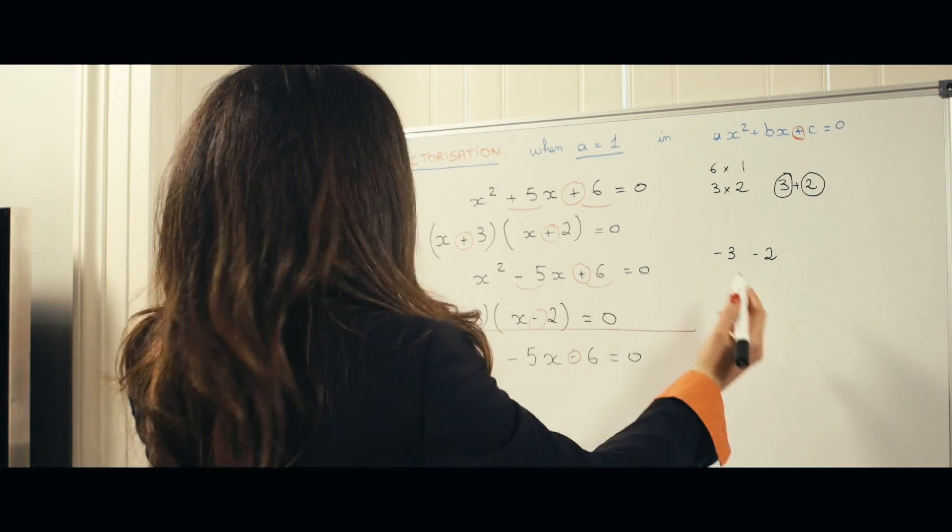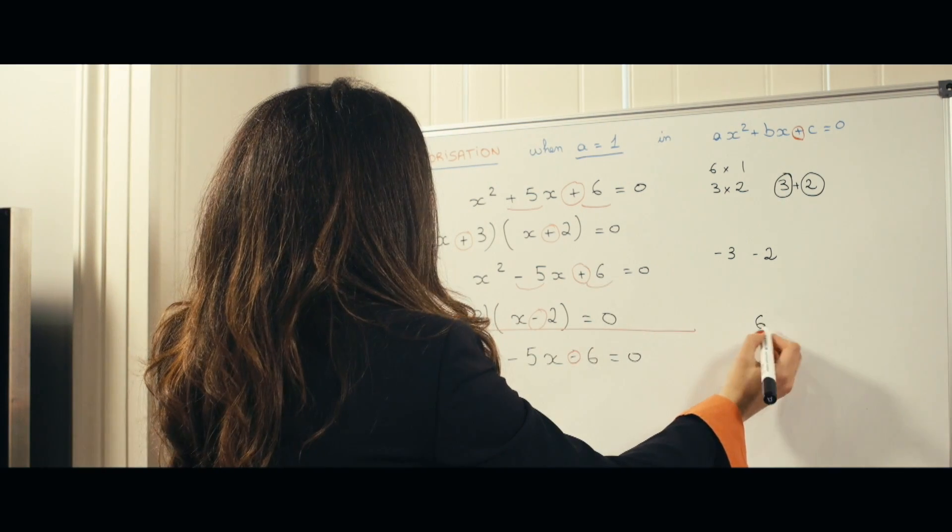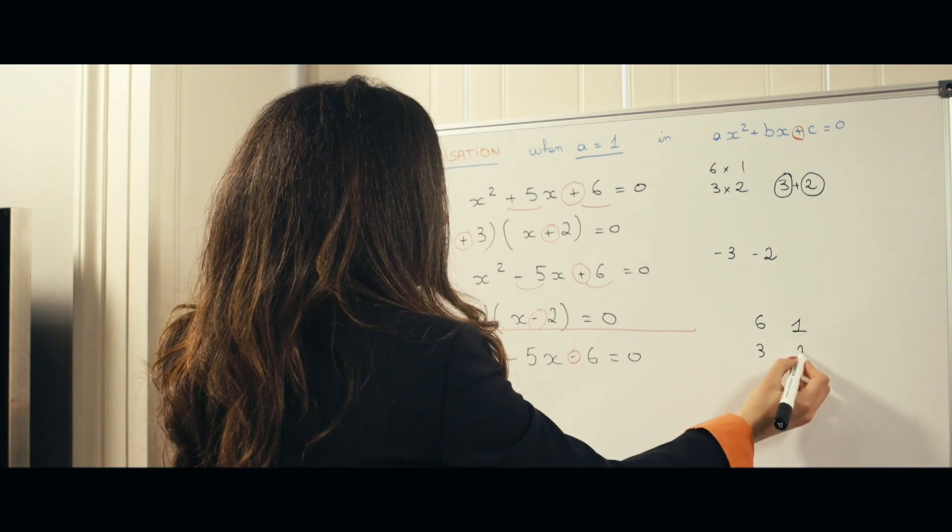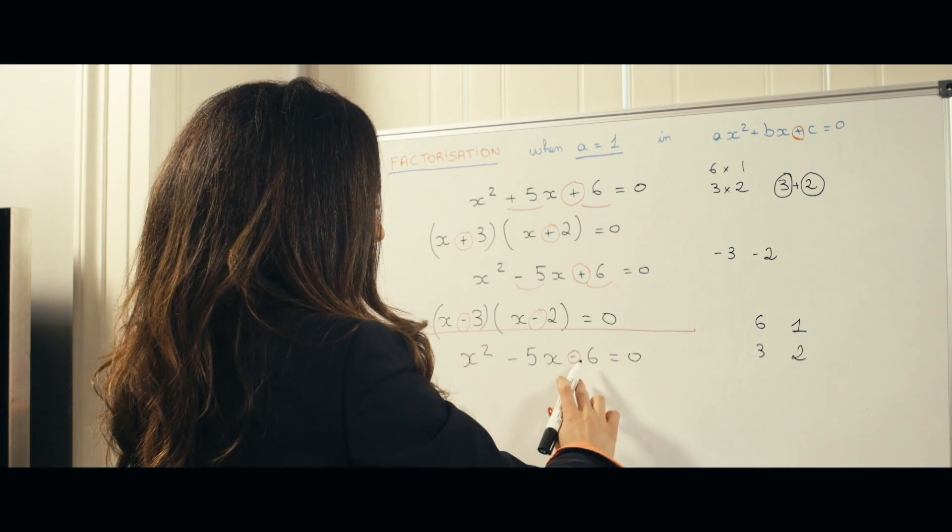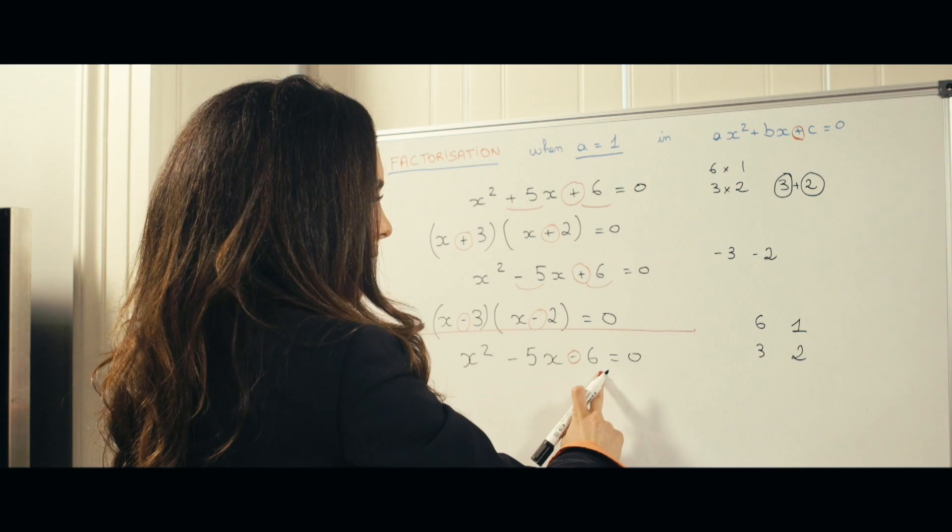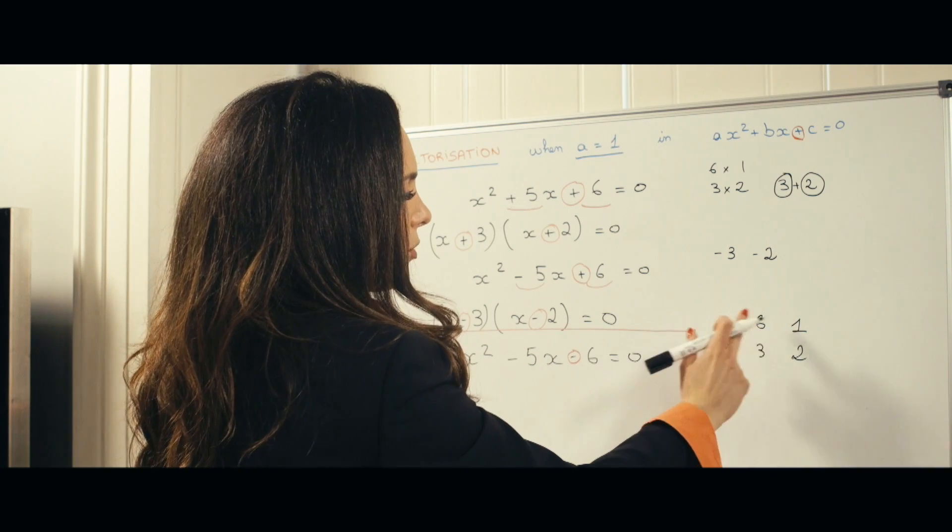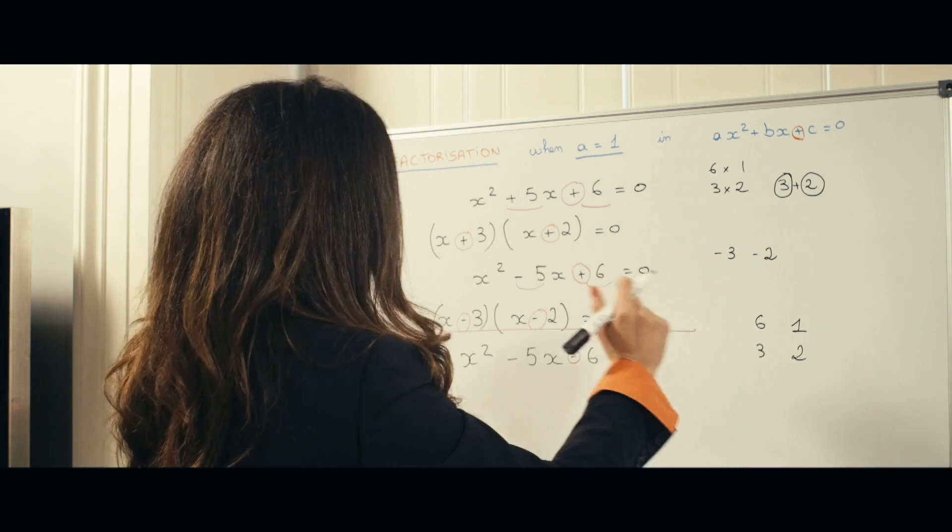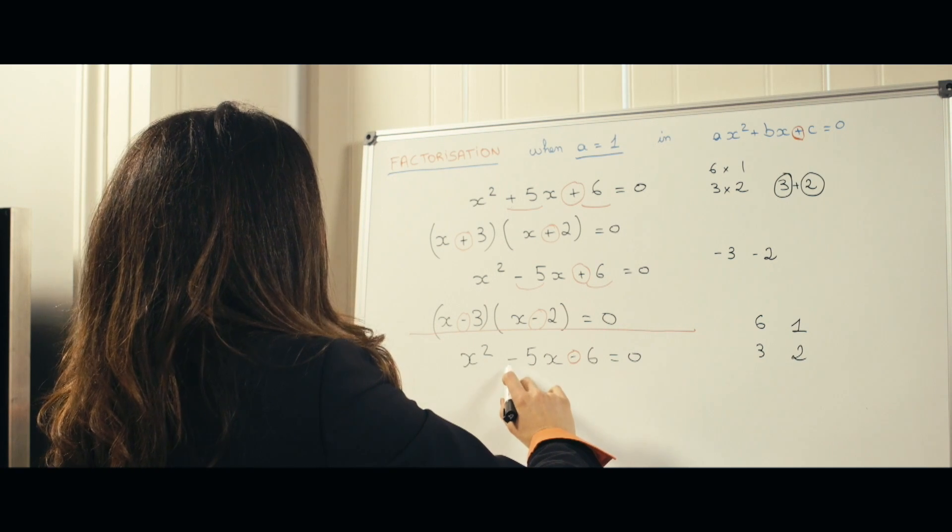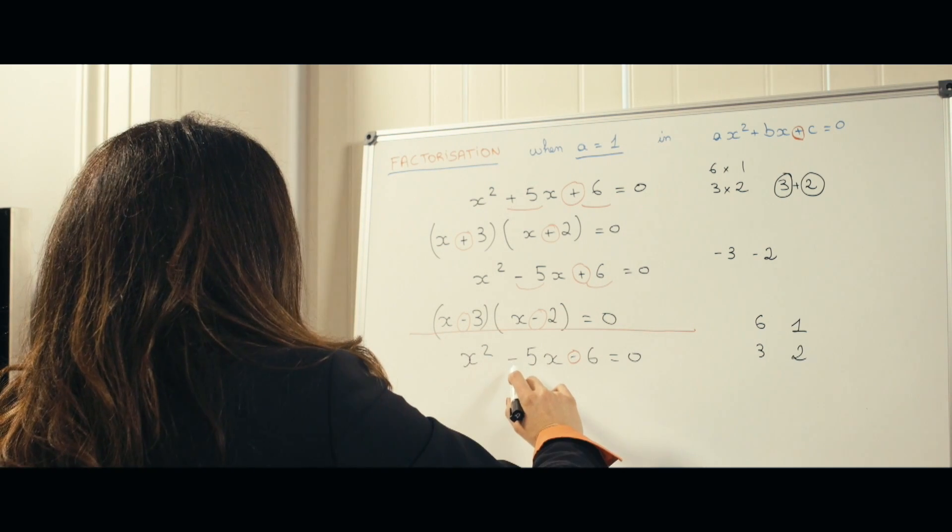So I'm looking, if we had 6 and 1, for example, or again, 3 and 2, what two numbers would multiply to minus 6. So one of them has to be minus and one of them has to be plus. And add to minus 5 together.